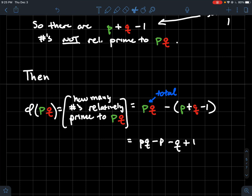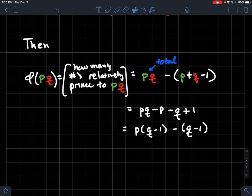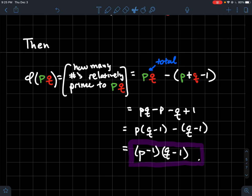Now do a little bit of algebra. Distribute that minus sign. You should get pq minus p minus q plus 1. Do a little factoring. Factor that p out of the first two terms there. Do a little factoring again. And you get your final answer of p minus 1 times q minus 1. So that is the formula for phi of p times q.